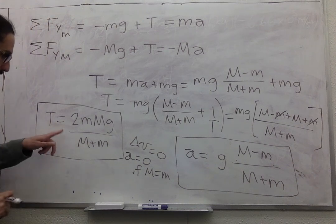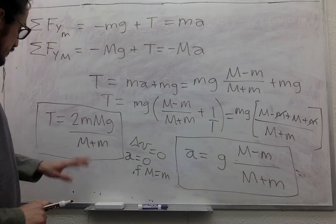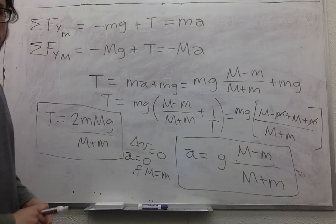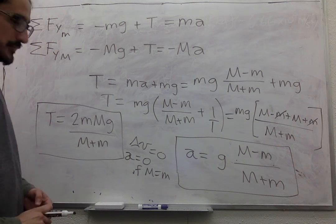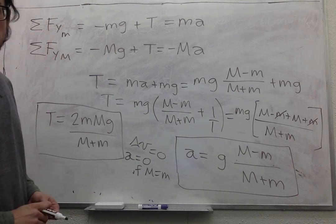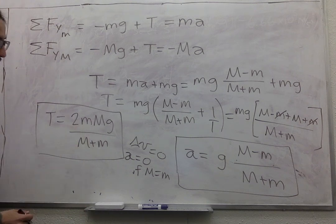Find the tension in the rope, we found it here. Interpret your equation for part D, so this equation, in the special case where one of the masses is zero. Interpret means to figure out what happens mathematically. Well, the tension is zero.